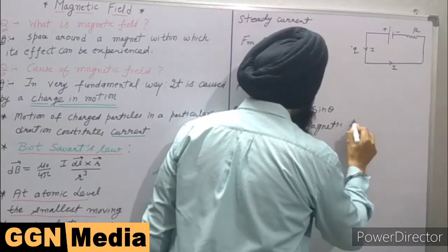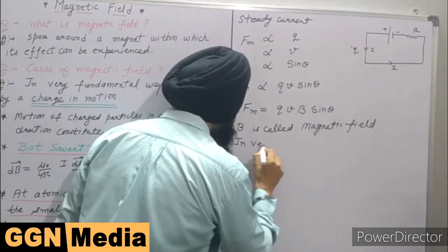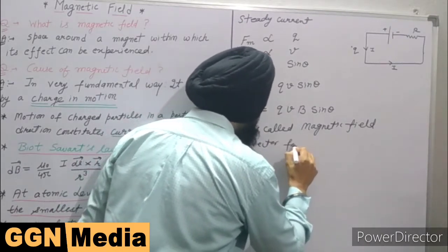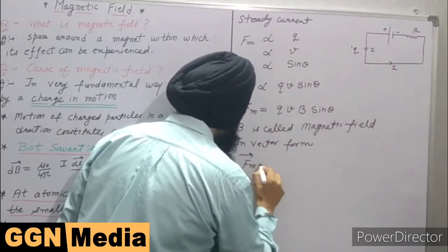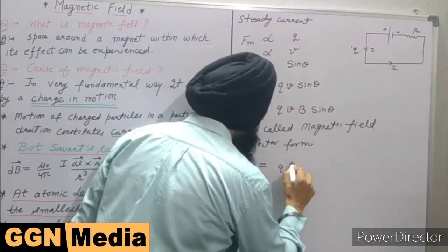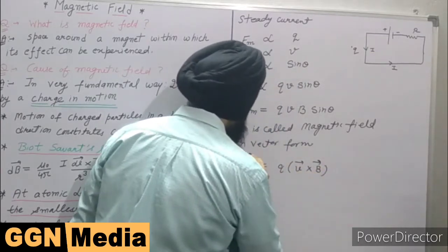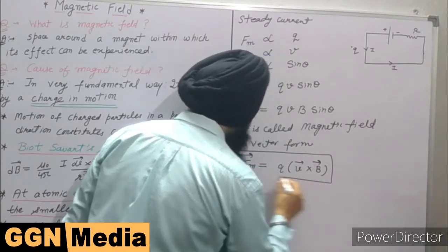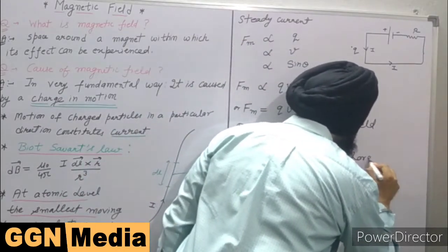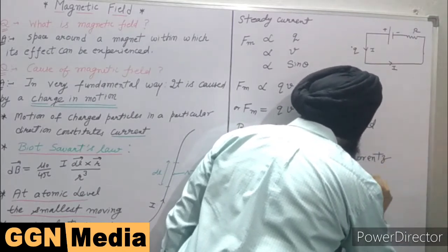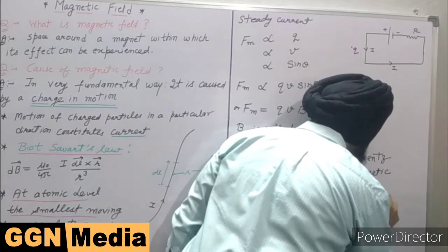In vector form, we can say this magnetic force Fm is equal to q v cross B. This force is called Lorentz magnetic force.